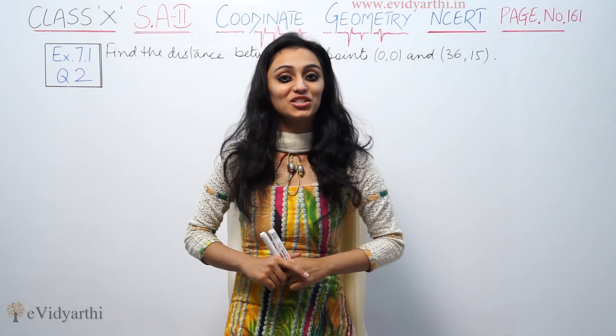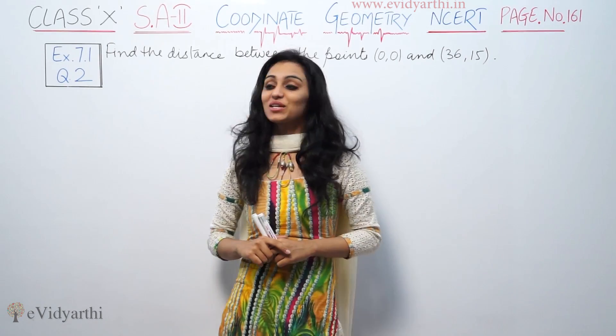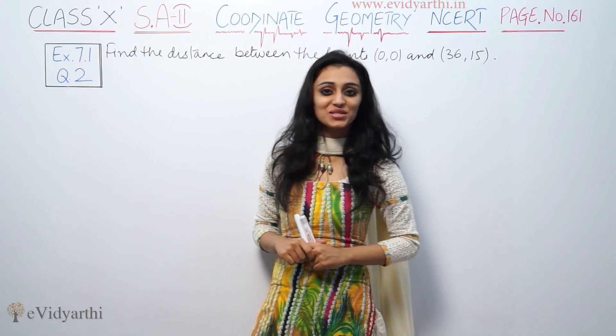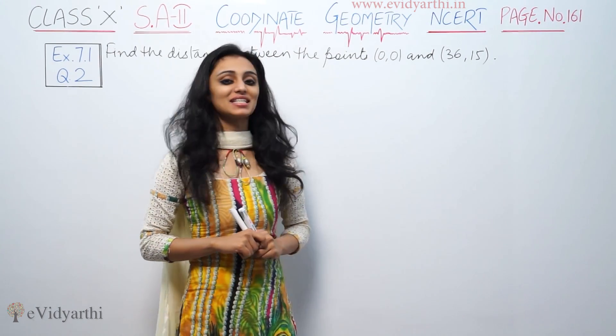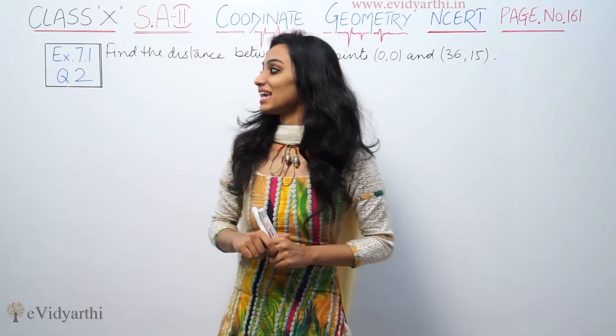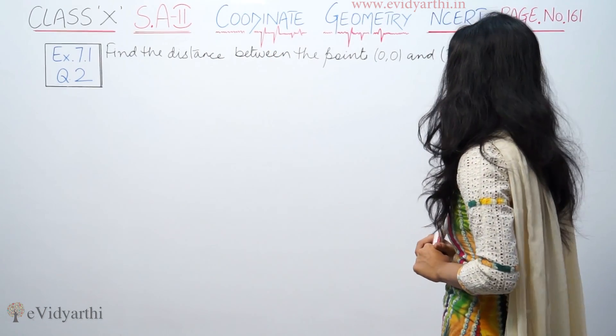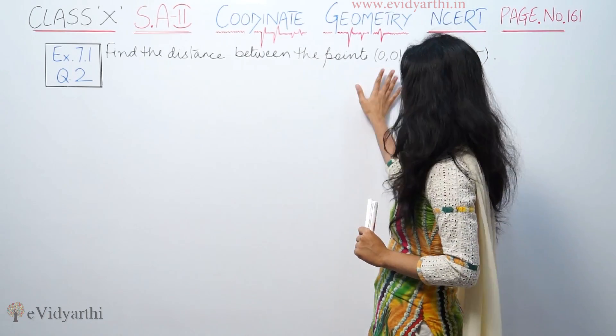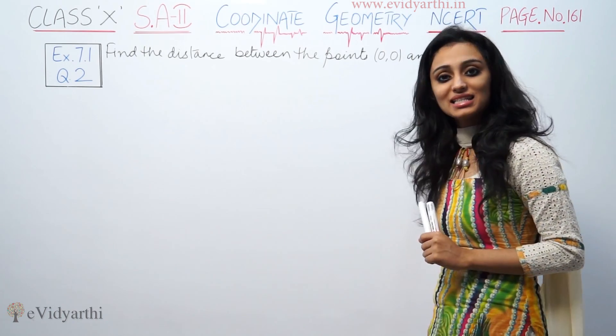Hello, this is Krish Poo with another question of coordinate geometry. This is question number 7 from exercise 7.1, page number 161 from NCERT. This says, find the distance between the points (0,0) and (36,15). Now we have to find distance between these points.